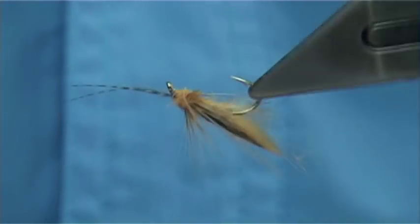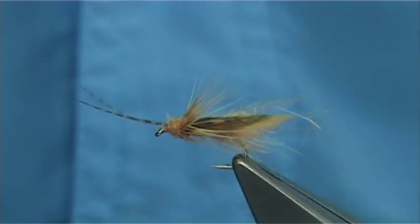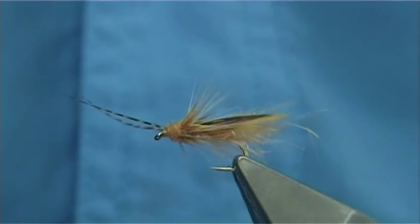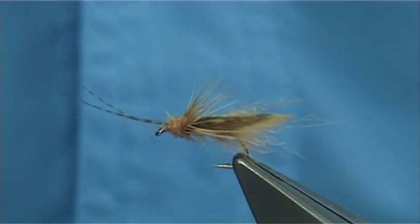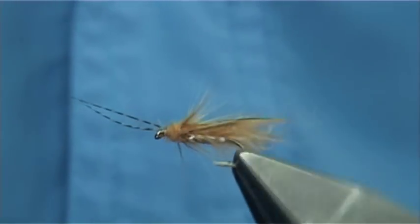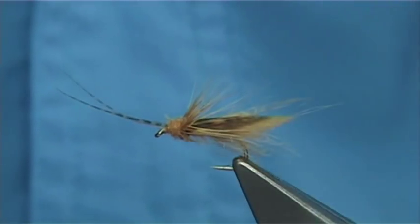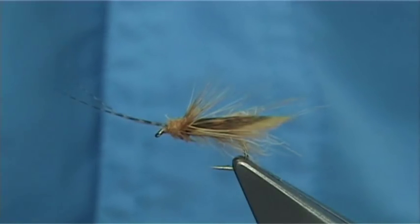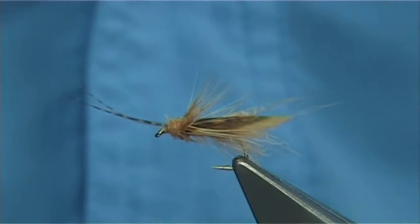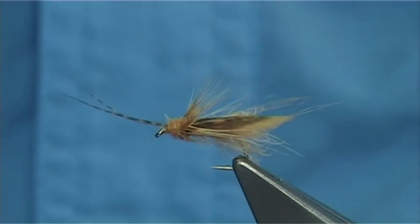But anyway, as you can see, it makes a nice caddis pattern. Very simple really, just take your time when you're tying it. Anyway, that's my version of using bug bond to form the wings for a caddis pattern. It's very simple and easy to do. Hope you enjoyed that. And that's the tan caddis.